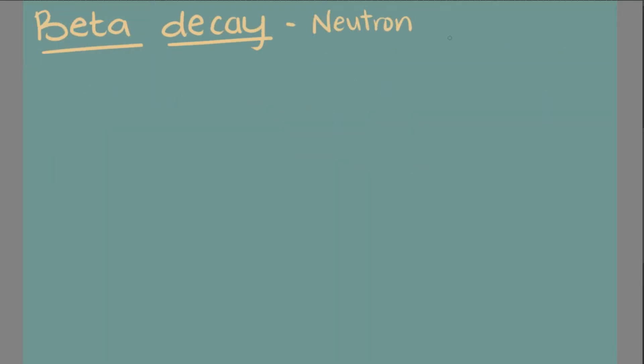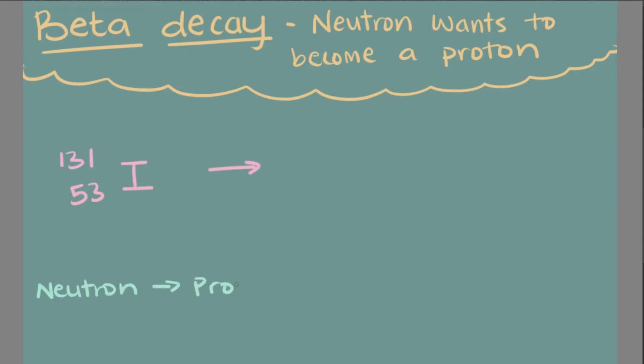Beta decay happens when a neutron wants to become a proton. This happens because a neutron emits a beta particle, also known as an electron. Once released, the neutron is now a positive proton. Keep in mind, the proton identifies which atom we're working with. By the neutron converting into a proton, we now have a new element we're working with.